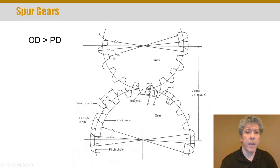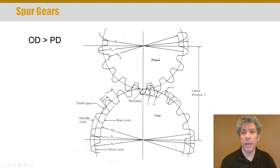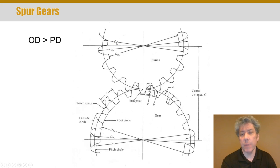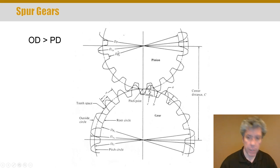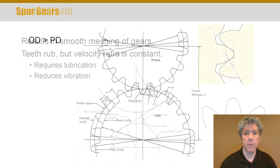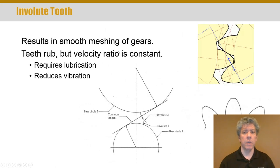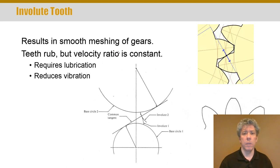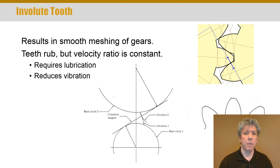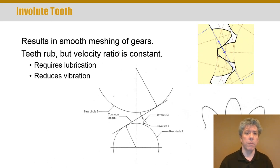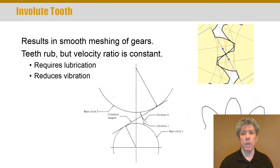On the pinion, there's also the root diameter of the pinion DRP, the outside diameter of the pinion, and then the diameter of the pinion is the pitch diameter. So those are the common geometric numbers and dimensions important for gear geometry.